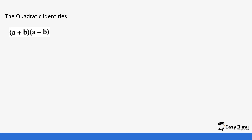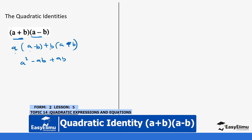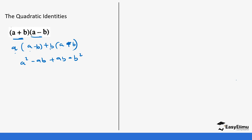So typically how we figured this out in previous lessons: we use this expression to open it, so it becomes a times (a minus b) plus b times (a minus b). That gives us a squared minus ab, then plus ab minus b squared. The minus ab and plus ab cancel out completely, so you are left with a squared minus b squared. This is the easiest of all the identities — you only work with a and b, subtract the two, and get your answer.